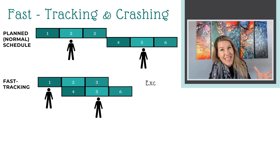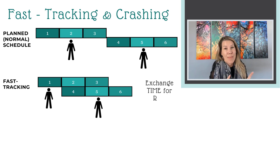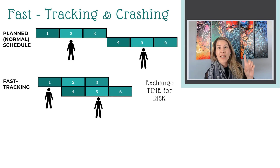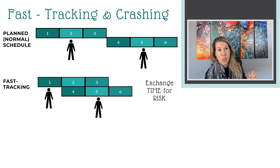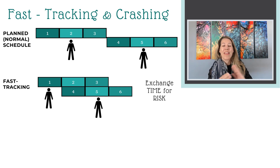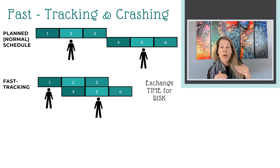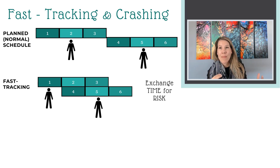Now you can see the risk here. We're exchanging time for risk, because if something changes with that user interface design, it's most likely going to change the coding as well, and there may be rework for task 4, 5, and 6. So that's fast-tracking — it's where we start to overlap work, completed in parallel with different resources, and we're exchanging time for the risk of having to complete some rework.